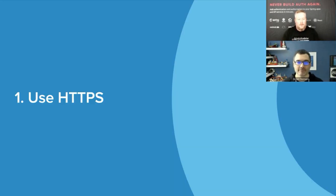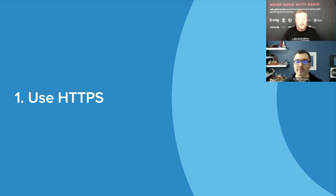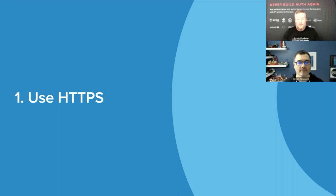We're going to start with one of my favorites: use HTTPS — in production primarily. HTTPS is also called TLS, which is the official name. You might have heard it called SSL in the past — Secure Sockets Layer — but that's the deprecated name. It's a cryptographic protocol that provides secure communication over a computer network, with a primary goal of ensuring privacy and data integrity. As of July 24, 2018, Chrome now labels HTTP sites as not secure, so try to use HTTPS as much as you can, especially in production.